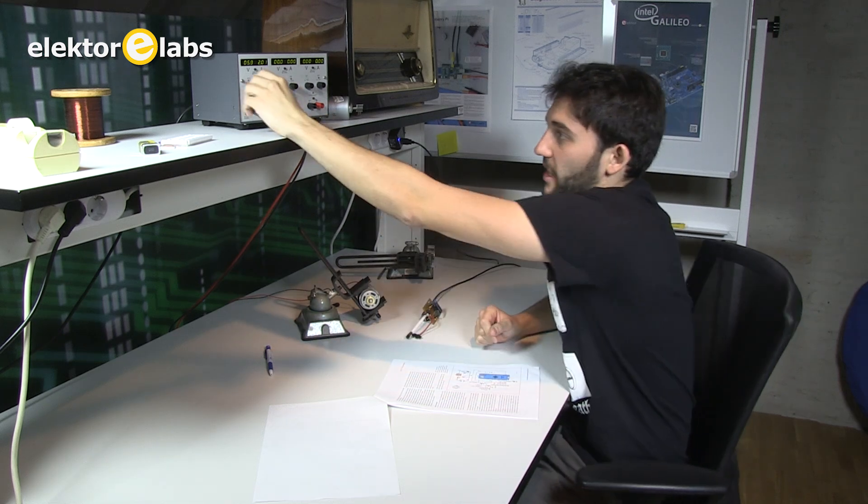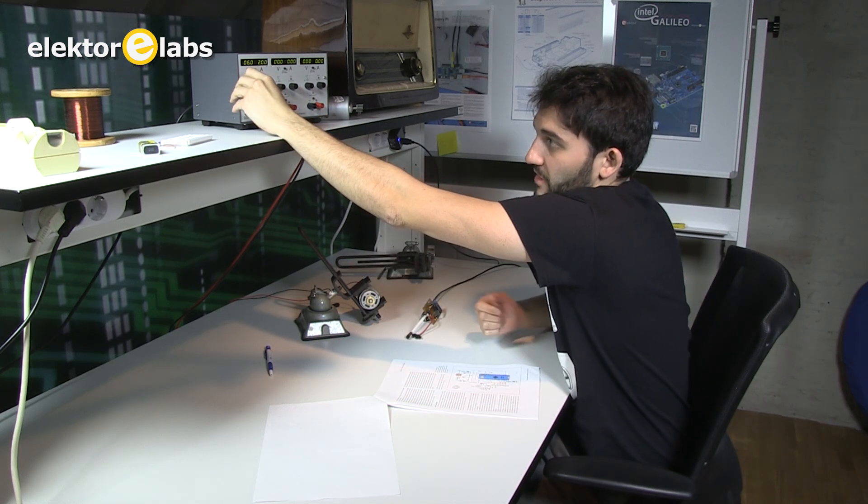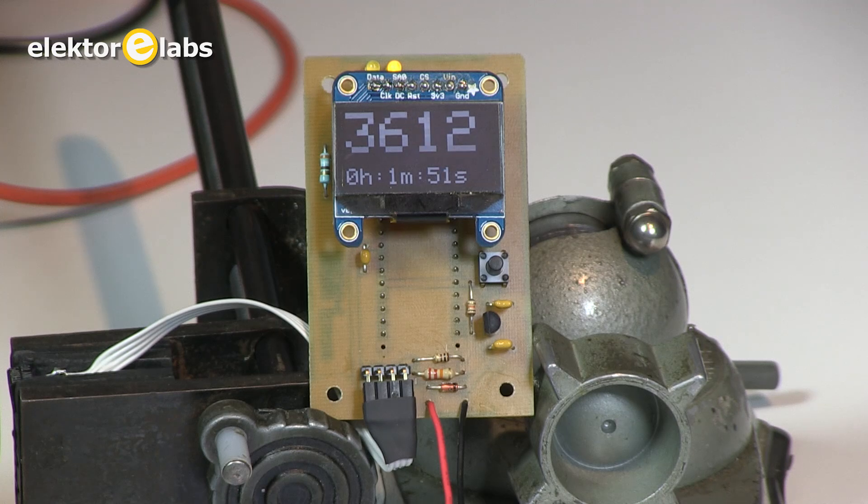Now when we turn the voltage down, the revolutions will be down as well, and that is something we can see on the display.